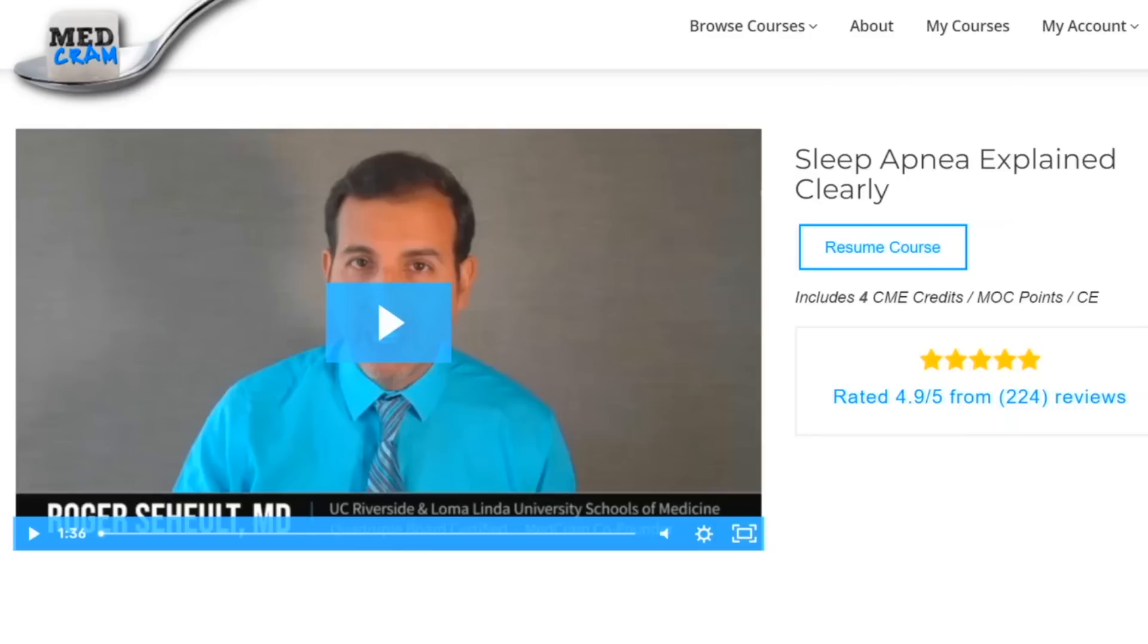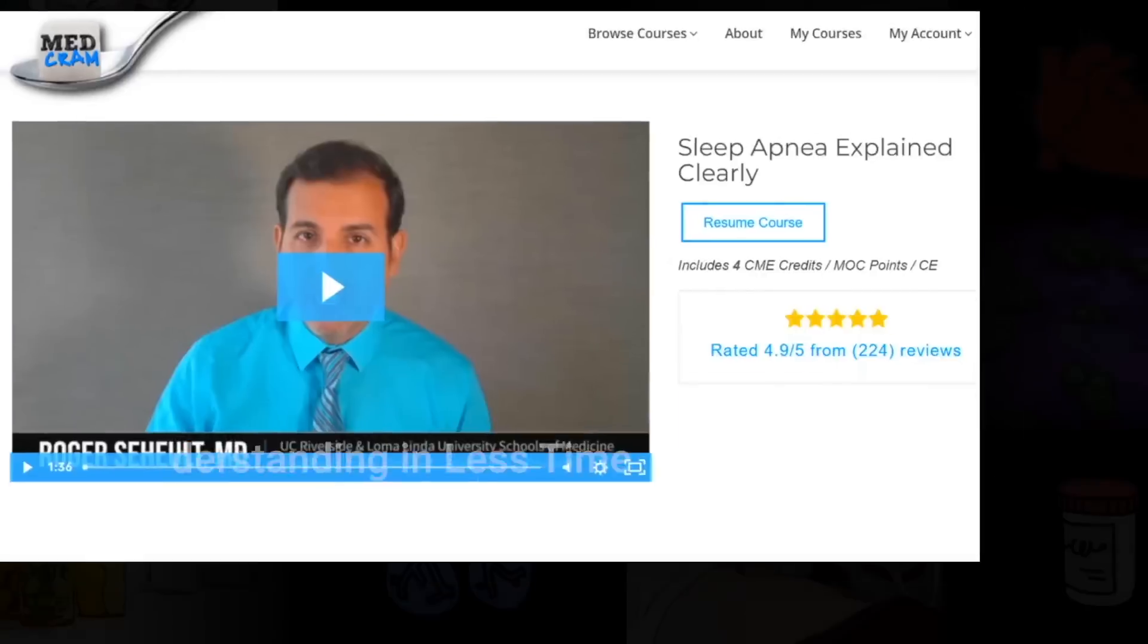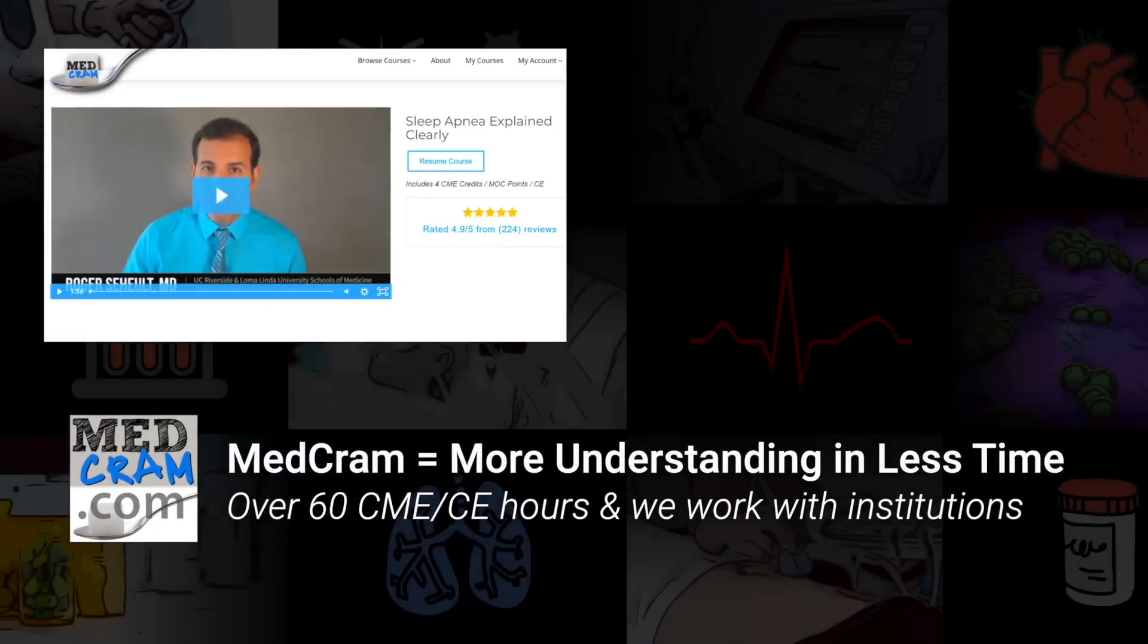Atrial fibrillation is a very common diagnosis, and you really want to do everything that you possibly can to, number one, avoid it if you can. Number two, if you do get it and it goes back and forth, that's called paroxysmal, then to try to keep it in sinus rhythm. And the way to do that is to reduce sympathetic nervous system discharge by treating any obstructive sleep apnea that might be present.